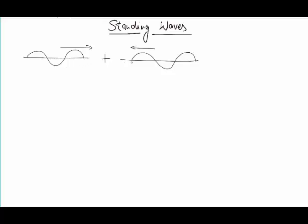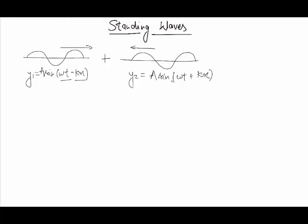Here I have taken the medium as a long string. On this string, these two waves — first is y1 and second is y2. We know that the equation of a wave is an equation of both x and t. A simple equation would be y equals a sine of (omega t minus kx). Now, omega t minus kx — the negative sign here represents that the wave is travelling in the positive direction. Similarly, if I write y2 equals a sine of (omega t plus kx), then this positive sign represents that this wave is going in the negative direction.